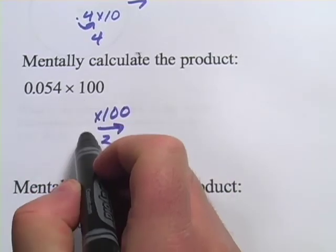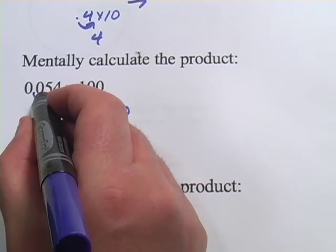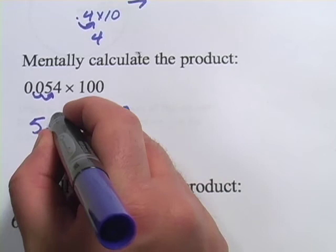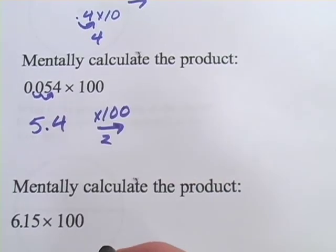So if you want to mentally calculate this product, all you have to do is go 1, 2, and there's our new decimal point, and we've got 5.4. Piece of cake.